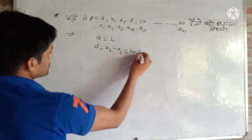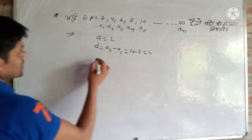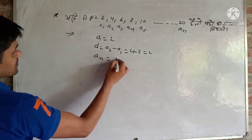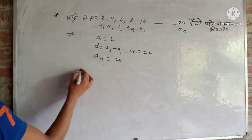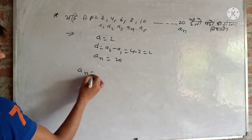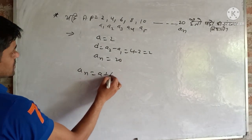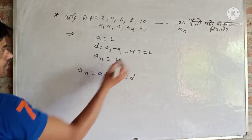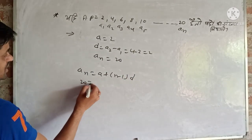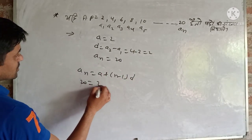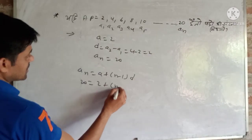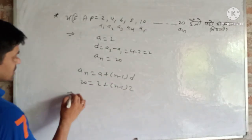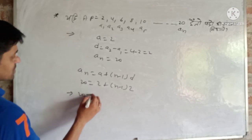What happens? 4-2. How much is it? 20. We have two parts for n. We have 20, so we will do 20 times.